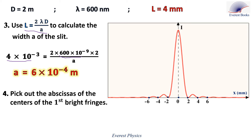Part four: pick out the abscissas of the centers of the first bright fringes. Look at the green points on the figure — these are the centers of the first bright fringes. The abscissa of the right-side point is 3 millimeters, because the center of a bright fringe is halfway between the centers of its bordering dark fringes. Similarly, the abscissa of the left-side point is minus 3 millimeters. So the abscissas of the first bright fringes are plus 3 millimeters and minus 3 millimeters.